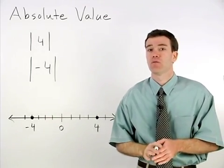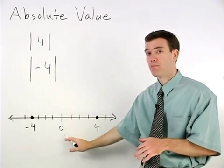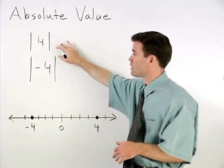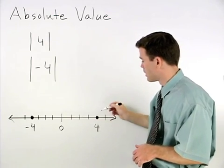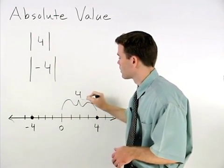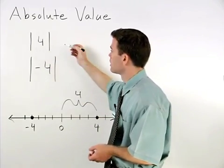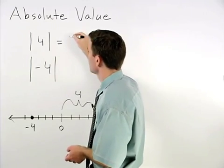Absolute value means distance from zero on a number line. So for the absolute value of four, we know that four is four units from zero on a number line. So the absolute value of four is four.